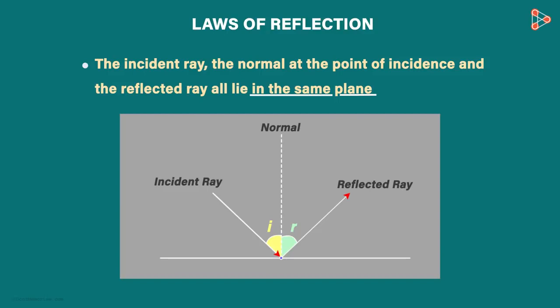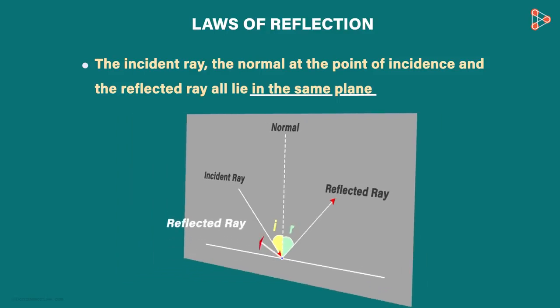For example, if the reflected ray is in this direction instead of this, then the diagram will look like this. The incident ray and normal are in the plane of the paper, whereas the reflected ray is not in this plane. This violates our second law and hence this ray will not be reflected in that direction. This is just not possible.